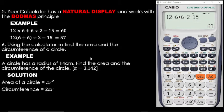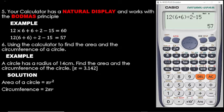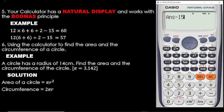Let's use the same question but with a bracket: 12 × (6 + 6) ÷ 2 − 15. Now we get 57. Using BODMAS, we solve the bracket first: 6 + 6 = 12. Then 12 × 12 = 144. Then 144 ÷ 2 = 72. Then 72 − 15 = 57. So your calculator has what you call the natural display.